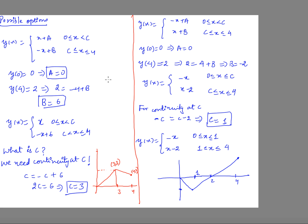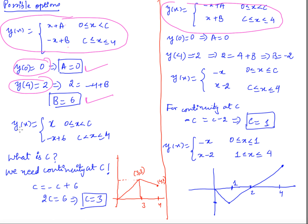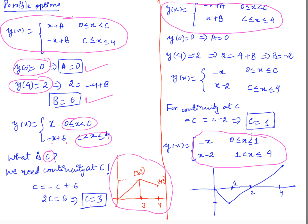For the first possibility, applying y(0) = 0 gives a = 0, and y(4) = 2 gives b = 6. So the solution is x on [0, c] and -x + 6 on [c, 4]. Continuity at c gives c = -c + 6, so c = 3. The broken extremal is found. A similar process for the second possibility gives another broken extremal. Both must also satisfy Euler's equation on [0, c] and [c, 4] separately.